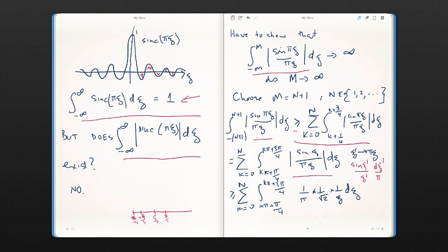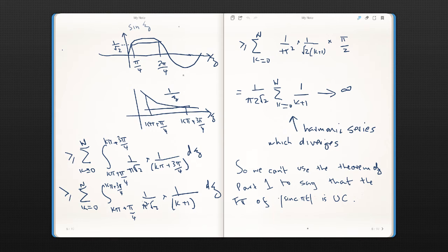Now, in this domain of integration, the absolute value of sin ξ is definitely greater than 1 over root 2. So that's the top there. And the reason for that is this diagram here. If you just look at π/4 to 3π/4, that's where the 1 on root 2 comes from. And you can see that sin ξ is above that line there.